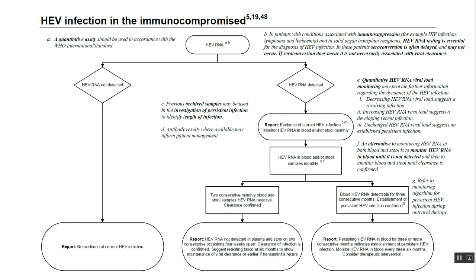If two consecutive monthly blood and stool samples are HIV RNA negative, clearance is confirmed. Specifically, clearance of infection is confirmed when HIV RNA is undetectable in blood and stool on two consecutive occasions four weeks apart. This suggests retesting of blood at six months to show maintenance of viral clearance.